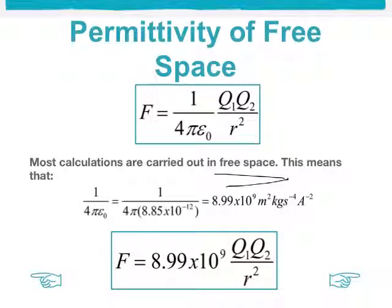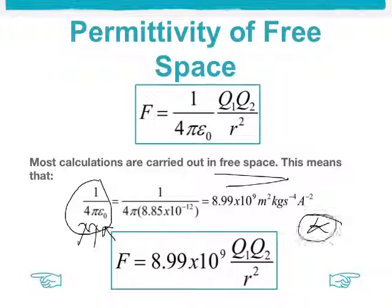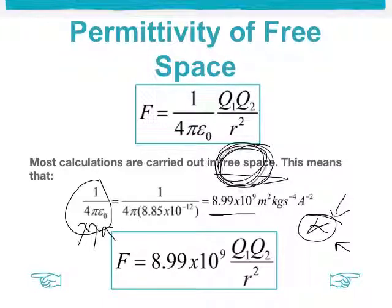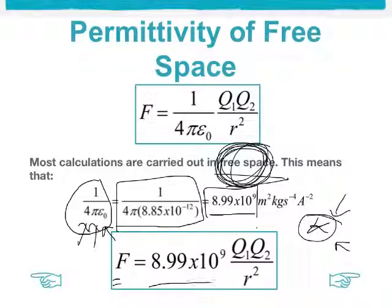So this means that we can generalise. You could divide 1 by 4π in the permittivity of free space every time you do the question. Or we can use something called the electric constant, 8.99 times 10 to the 9. This is also in the data booklet. So you could, as long as they don't change the material that they're doing the question in, you can generalise and just use this as 1 over 4π permittivity. A more generalised version of the formula, then, would be force equals 8.99 times 10 to the 9 q1 q2 over r squared.